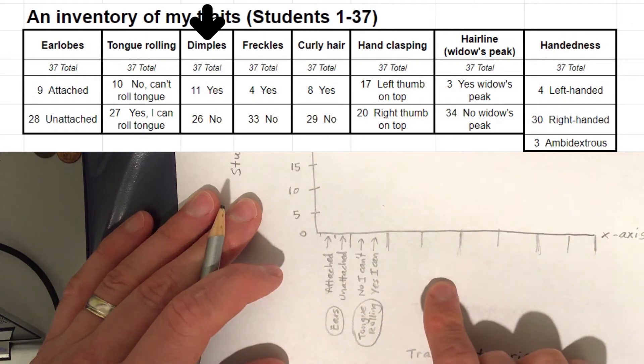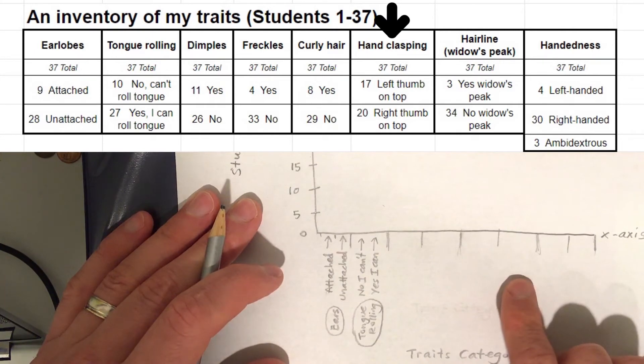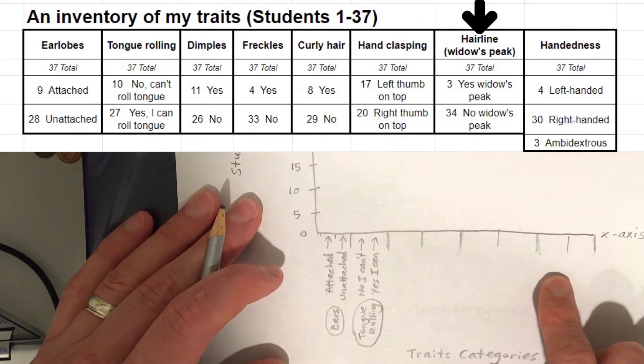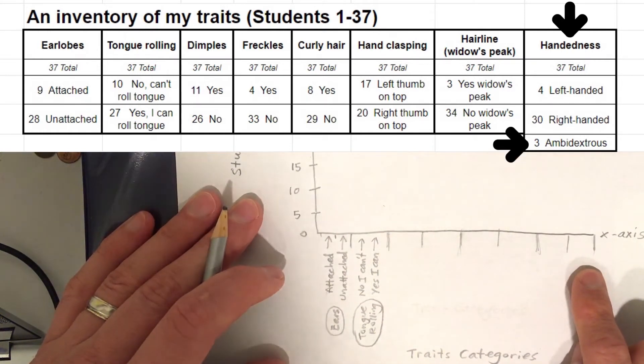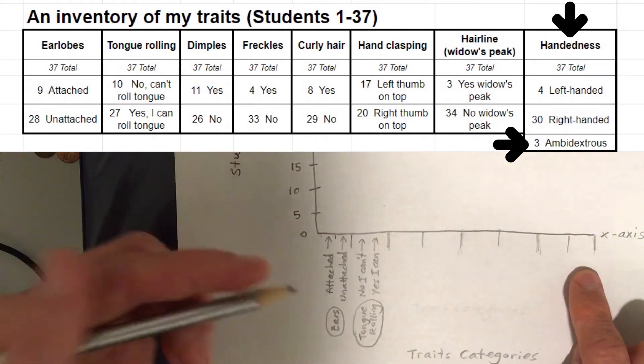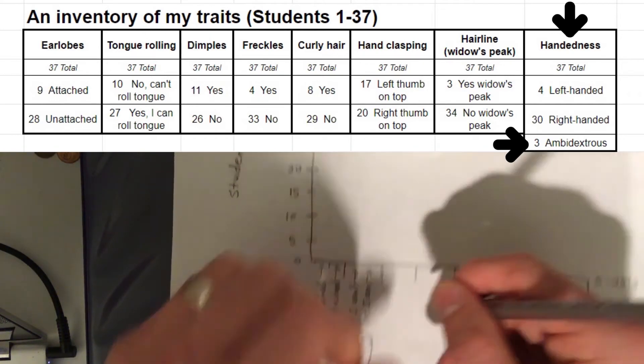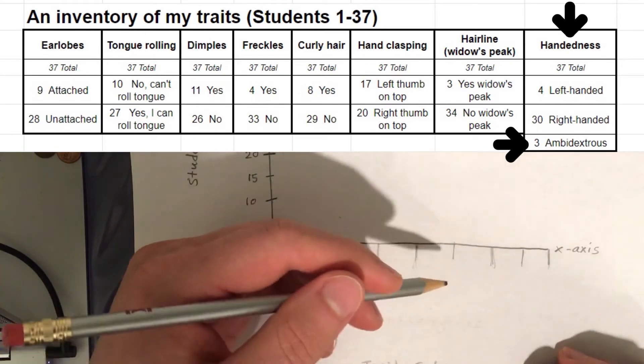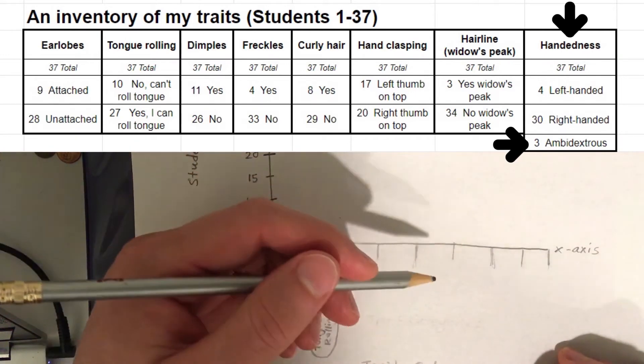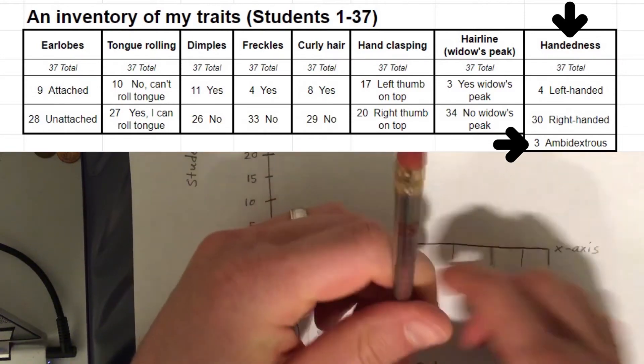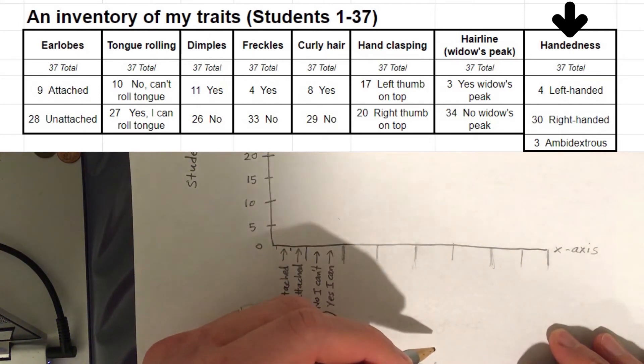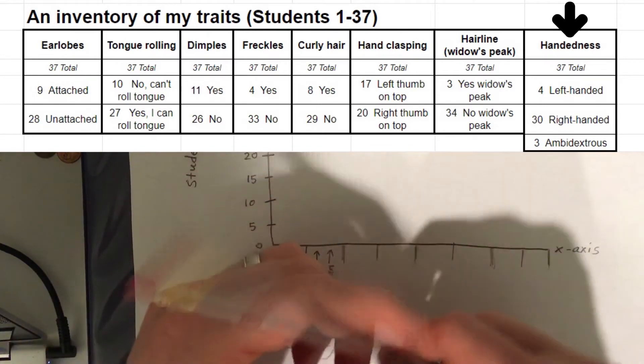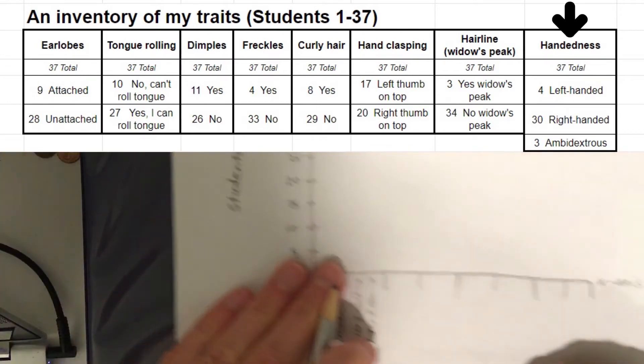Okay, so we got two categories here. Earlobes, attached or unattached. Or tongue rolling, no or yes. And then I am going to expect you guys to use the data table to fill in the rest of these. Okay, so this one is going to be dimples. This one is going to be freckles. This one is going to be curly hair. This one is hand clasping. And this one is hairline. Either yes or no, I have a widow's peak. And then this one is going to be handedness. So you are going to either write left handed or right handed or ambidextrous. And three of you actually indicated that you are ambidextrous. Ambidextrous means that you can use your left hand to write or you can use your right hand to write. And I kind of find that hard to believe. I don't think that ambidextrous is that common. But I could be wrong.